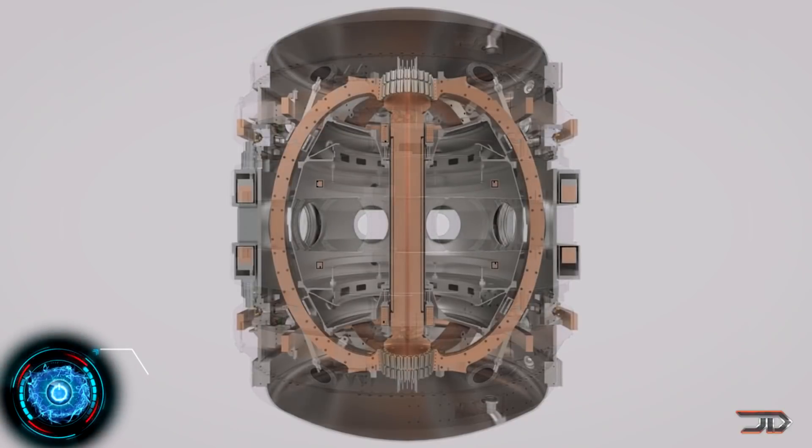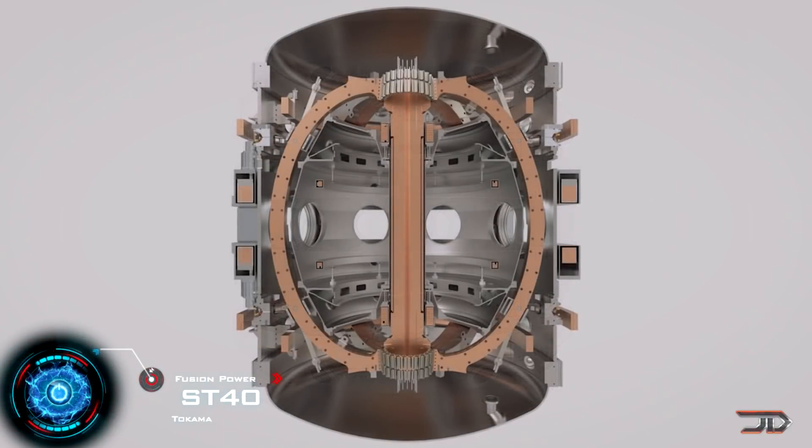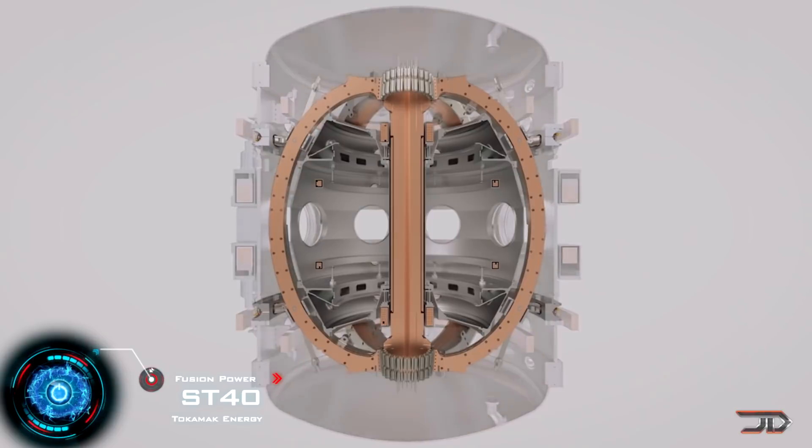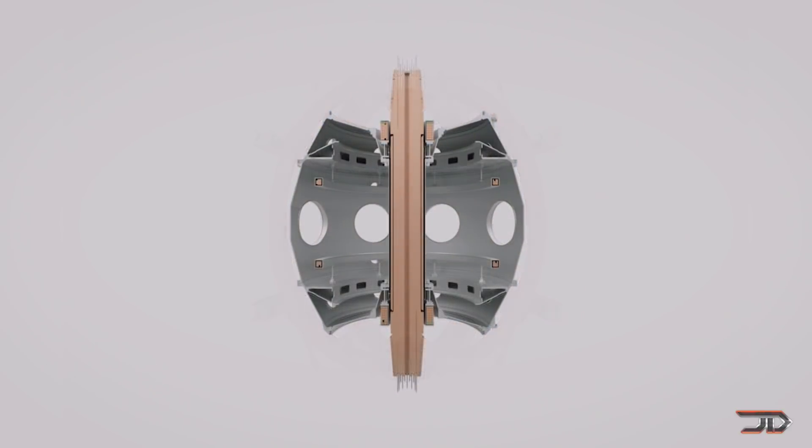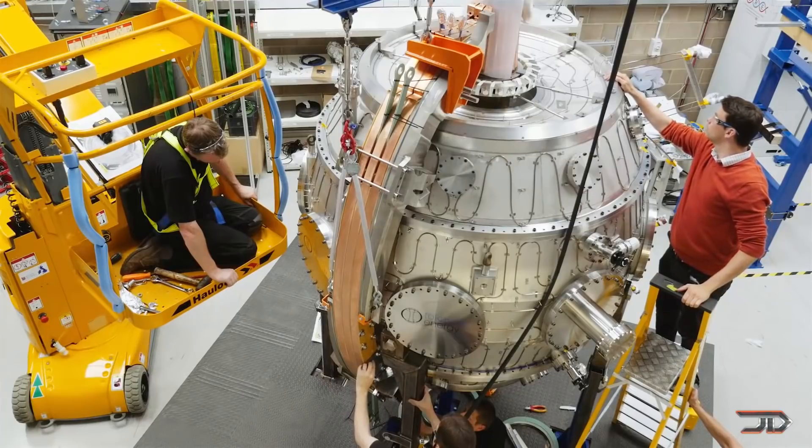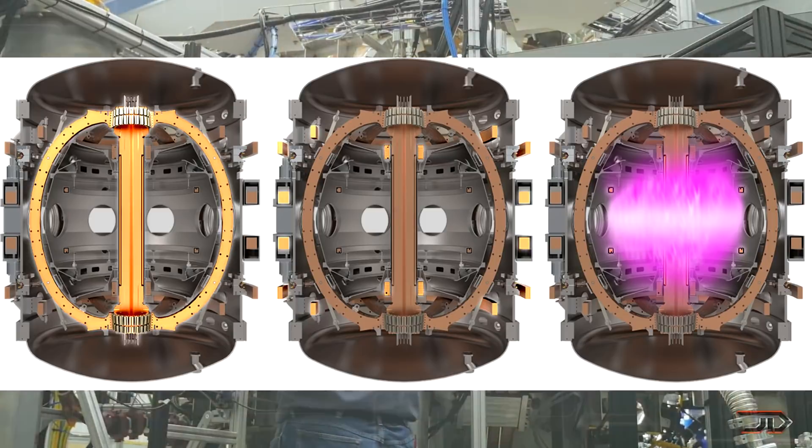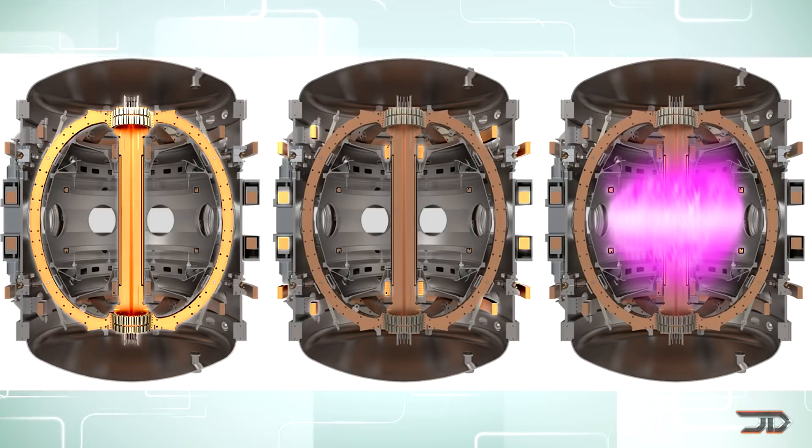Another company which is worth following is Tokamak Energy and their spherical ST40 reactor. They have combined a high magnetic field with a low aspect ratio. Rather than toroidal, the plasma is more spherical. And there could be an advantage to this, because you can combine a high magnetic field with a low aspect ratio.